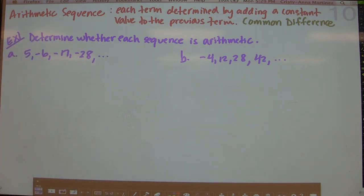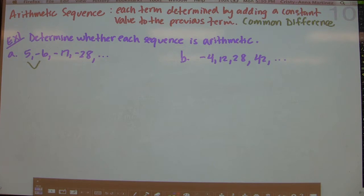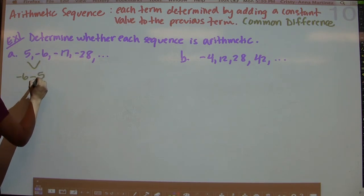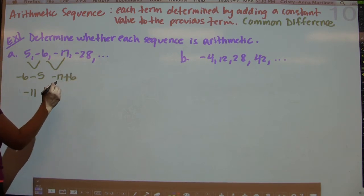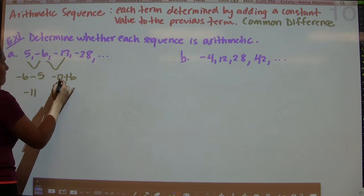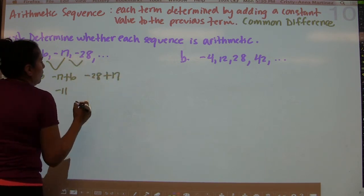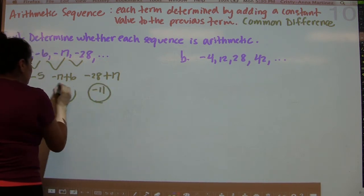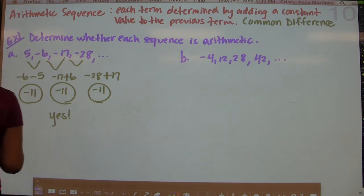Example 1 says: determine whether each sequence is arithmetic. It will be arithmetic if you can determine this constant value. We take two terms at a time and find the difference. Taking negative 6 minus 5 gives negative 11. Then negative 17 minus negative 6 also equals negative 11. And negative 28 minus negative 17 also gives negative 11. Because there is a common difference of negative 11, this is an arithmetic sequence — yes, it is.